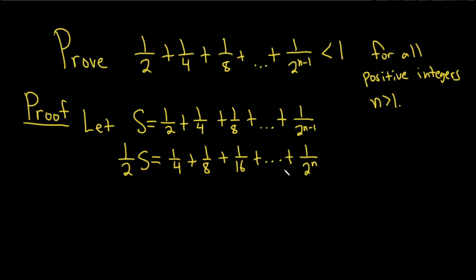And so now what we're going to do is subtract. So let's subtract. So we have S - (1/2)S. So if you subtract these, you'll get S - (1/2)S. And that's equal to, and then check this out. When we subtract top minus bottom, we have 1/2 minus, there's no 1/2 here, so we have a 1/2.